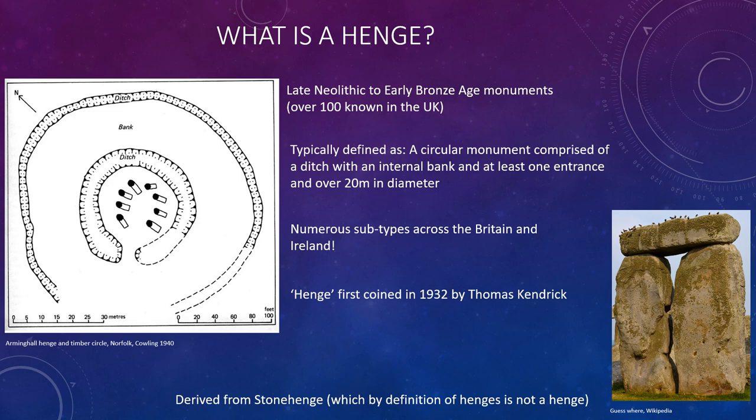Typically these monuments are defined as a circular monument comprised of a ditch with an internal bank and at least one entrance, and they're usually about 20 meters or over in diameter. They can be absolutely massive. There are variations on this design across Britain and Ireland and we'll discuss that later.